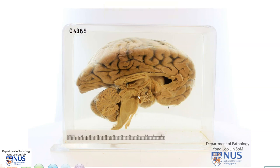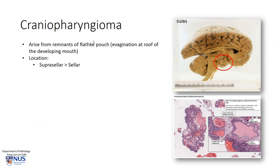It is important to take note of the location of this tumor, particularly because it can compress on several surrounding structures which can give rise to specific clinical signs and symptoms. Craniopharyngiomas are tumors that arise from the remnants of Rathke's pouch, which is actually an evagination at the region of the roof of the developing mouth. So we often see ectodermal elements here. It is located mostly in the suprasellar region but sometimes also in the sellar region.